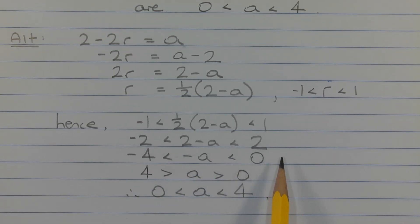And then multiplying all terms by negative 1. Now we have to flip the inequality signs. We get A is less than 4 and greater than 0. But to write it correctly, we write it this way. A is greater than 0 and less than 4.